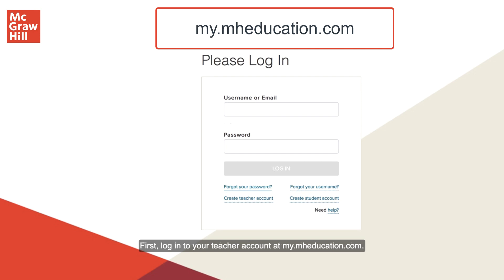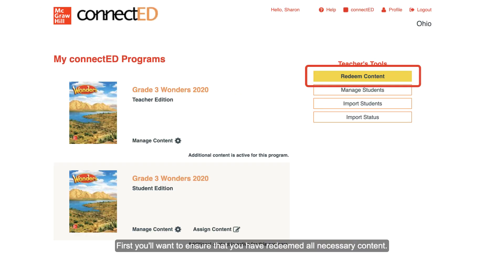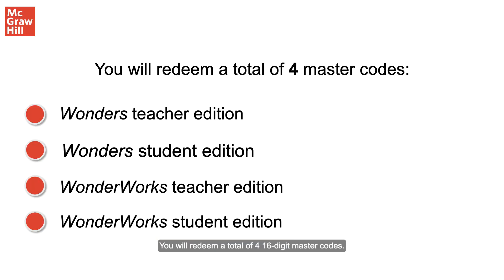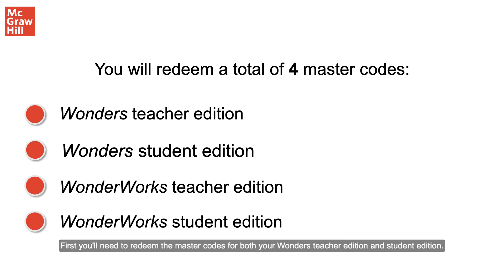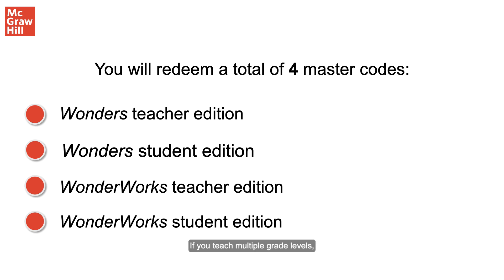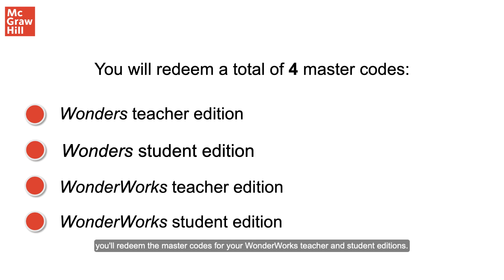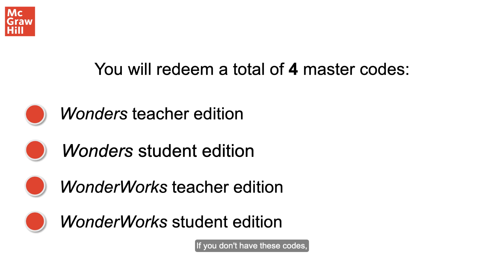Log into your teacher account at my.mheducation.com. You'll want to ensure that you have redeemed all necessary content. You will redeem a total of four 16-digit master codes — the master codes for both your Wonders teacher edition and student edition. If you teach multiple grade levels, you'll need to redeem a teacher edition and student edition for each grade level. Once you've redeemed these codes, you'll redeem the master codes for your WonderWorks teacher and student editions. If you don't have these codes, contact your organization administrator.